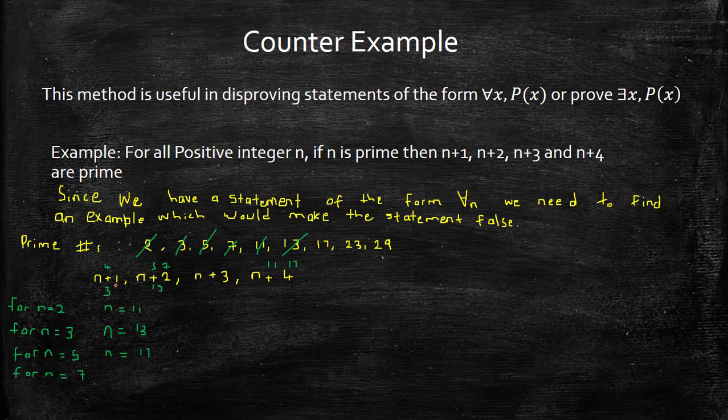For n=17, we have n+1 is 18, n+2 is 19, n+3 is 20, and n+4 is 21. Therefore, the counter example holds for n=17.